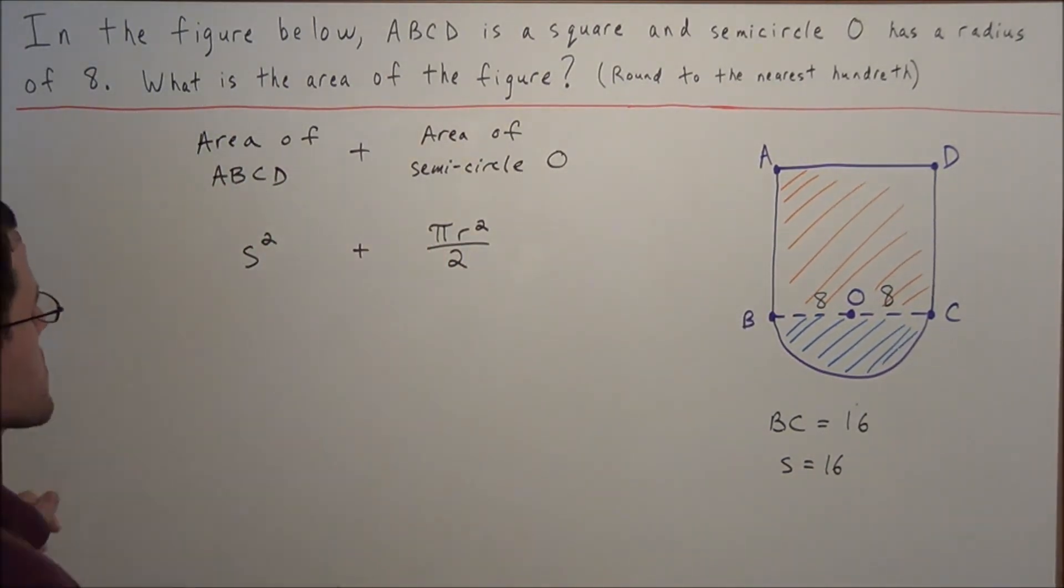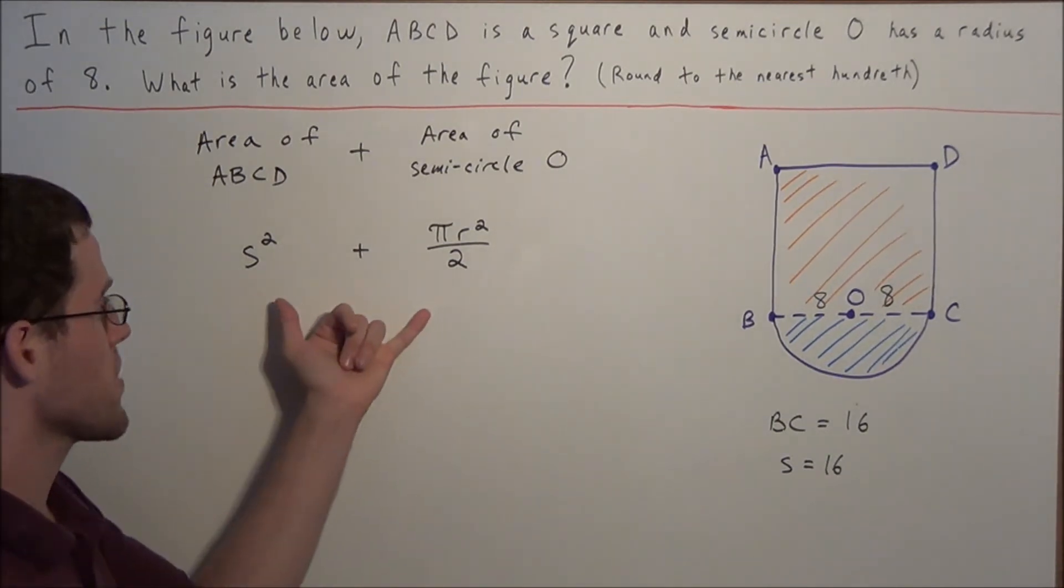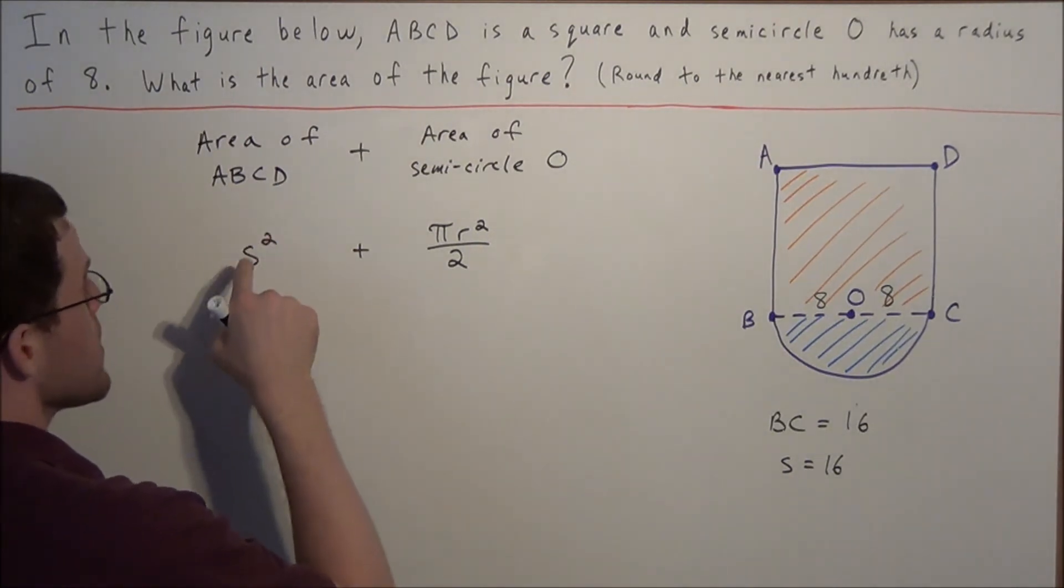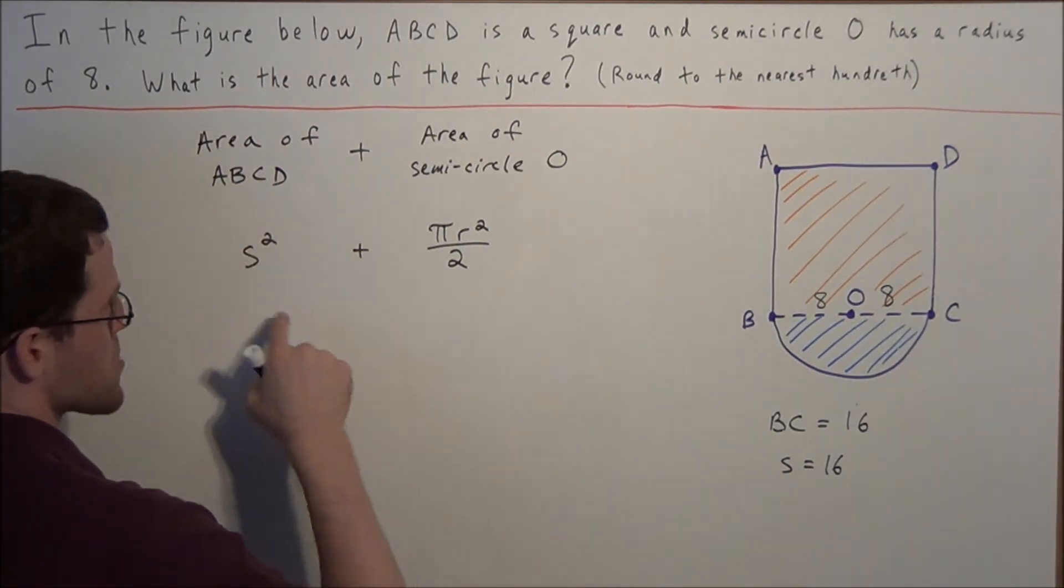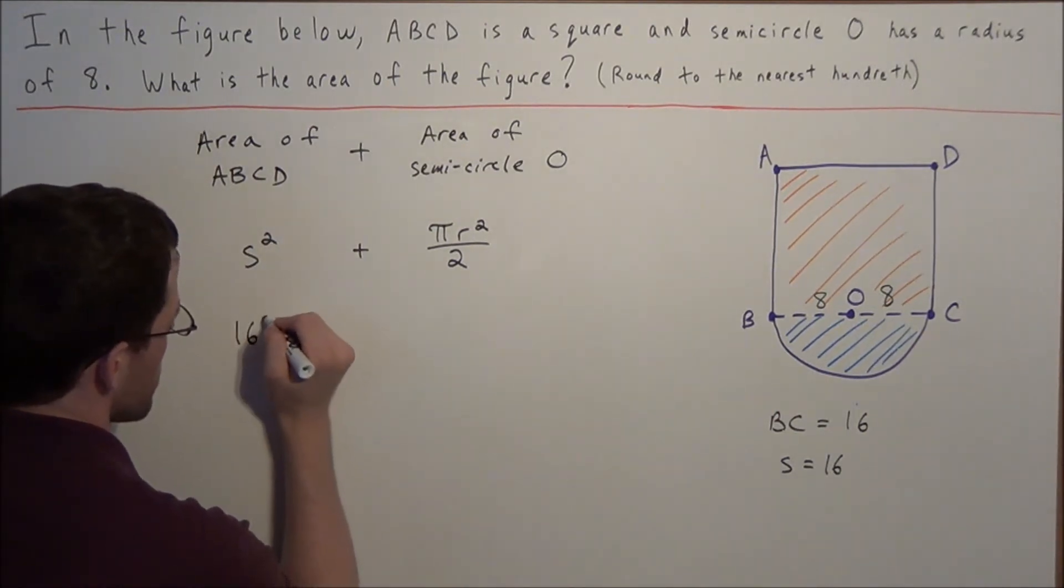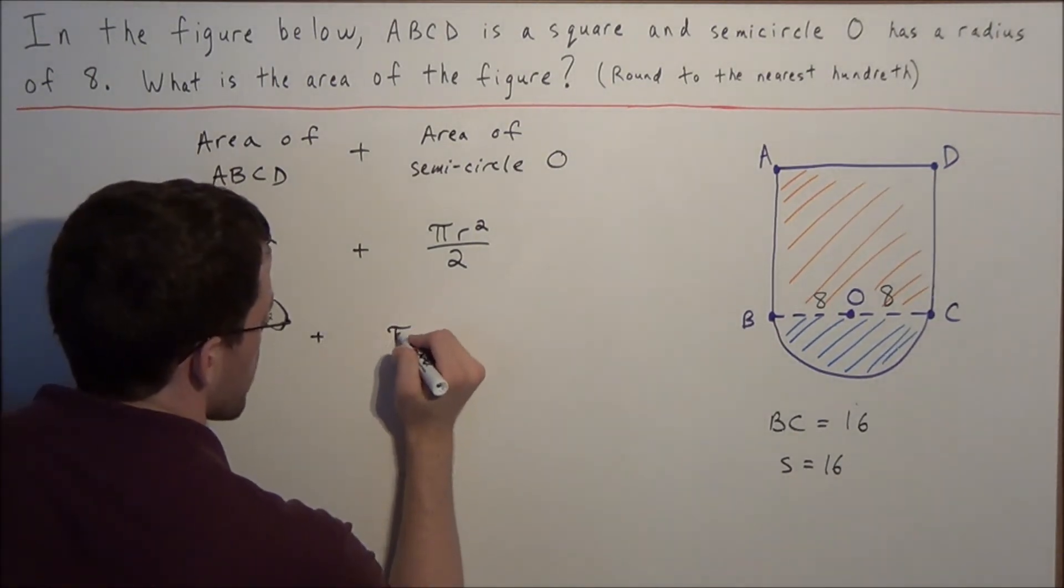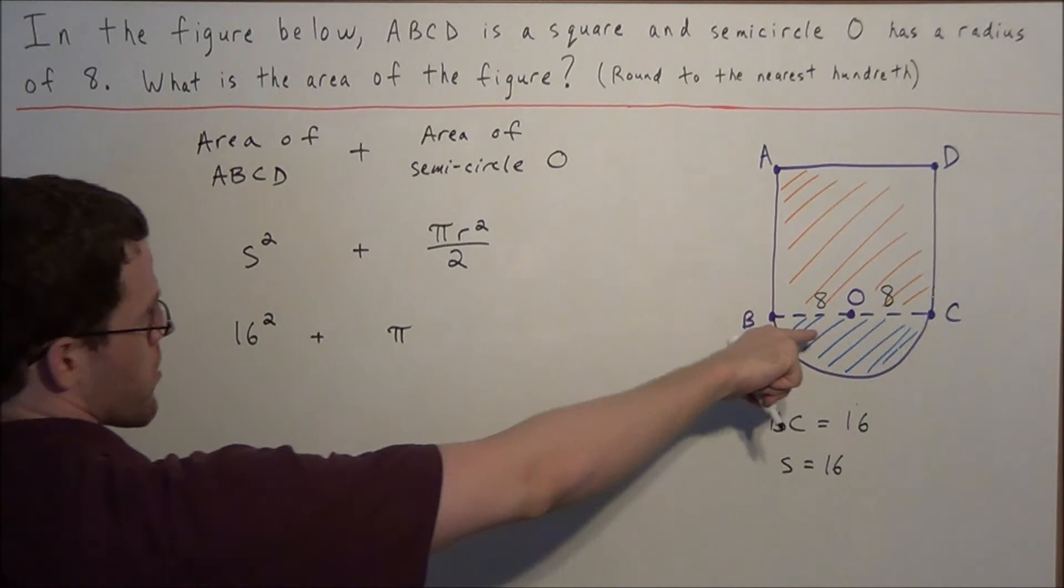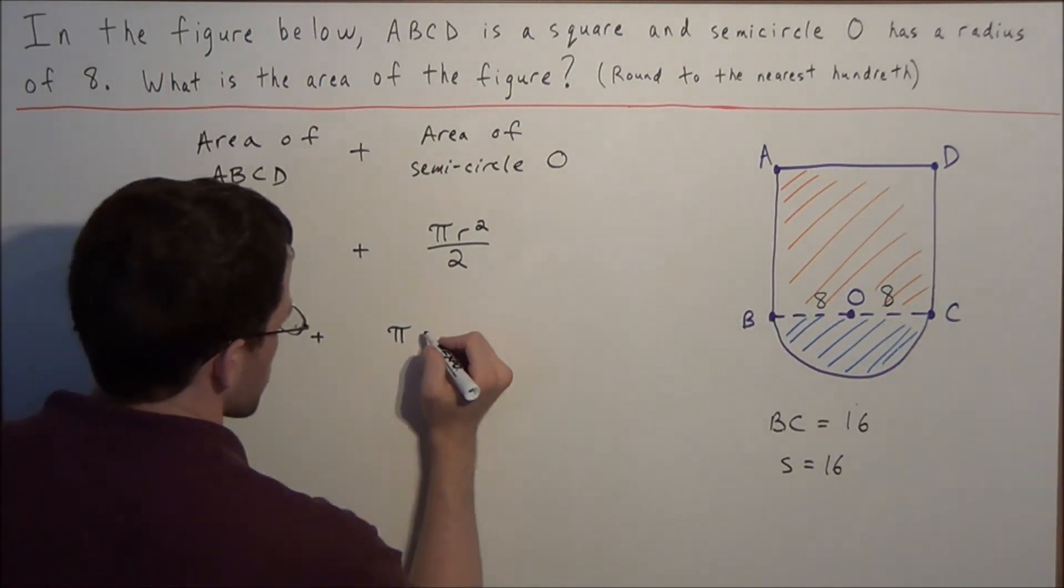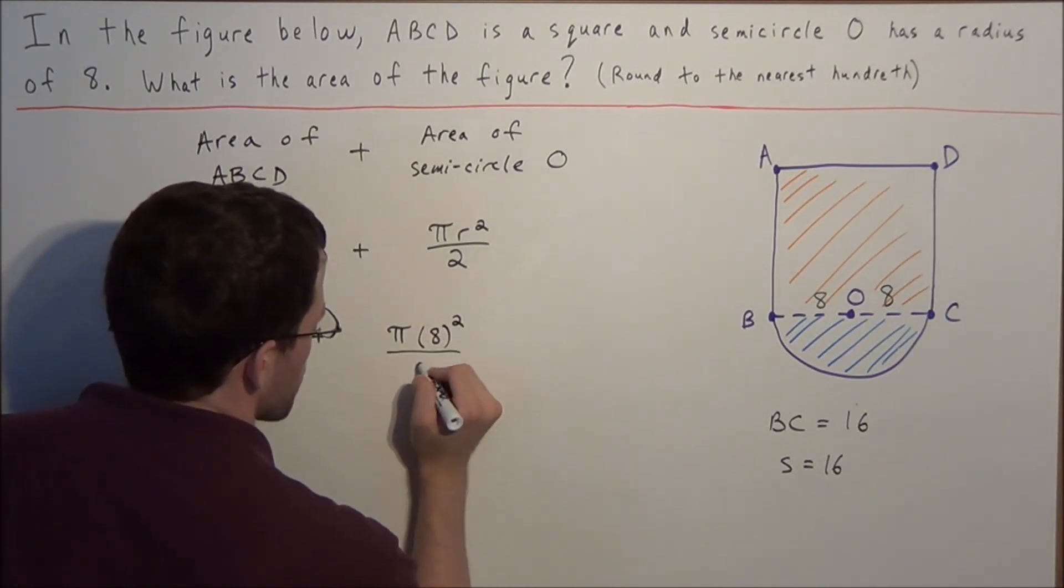So now all we need to do is we're going to substitute for the values that we just found and we could find the area of the full figure. So now the area of ABCD is represented by side squared. So we're going to substitute 16 for S. So we have 16 squared plus, and now we have pi r squared divided by 2. But remember by the diagram the radius is equal to 8 and that information was also given to us in the beginning of the problem. So we have pi times 8 squared divided by 2.